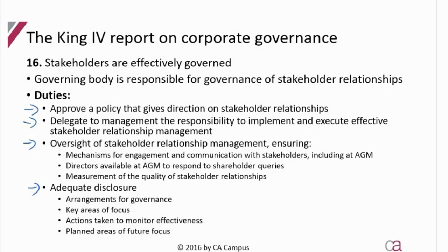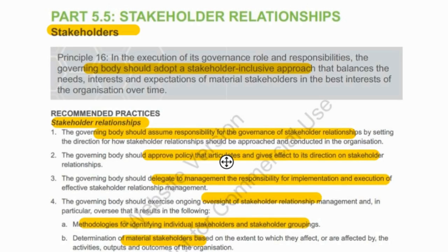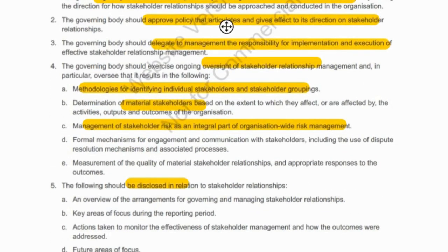Let's quickly finish with the stakeholders — same policy approval. For general oversight, they must communicate with stakeholders; the AGM is a great time. They must be available to discuss and meet with the shareholders, potentially at the AGM, and measure the quality of their stakeholder relationships. Stakeholders means anybody — shareholders, employees, the community, anybody who's affected by this company. They're responsible for it: must approve the policy, delegate it to management, have general oversight, and then disclose those requirements.